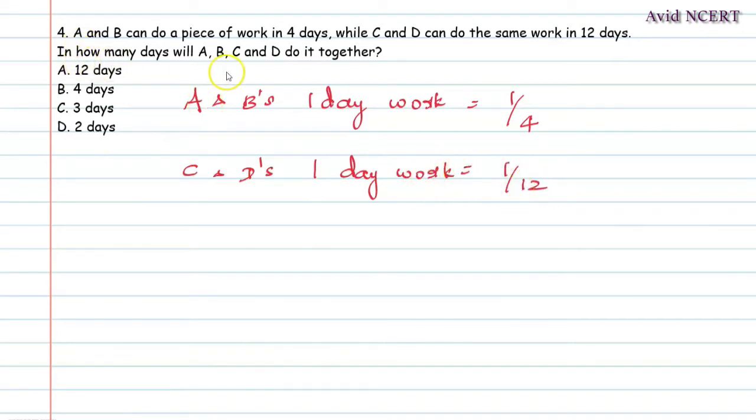Now we have to find how many days A, B, C and D will do it together. That is A plus B plus C plus D will be equal to 1 by 4 plus 1 by 12.